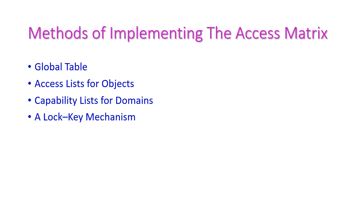The methods of implementing the access matrix are: first, global table; second, access lists for objects; third, capability lists for domains; and fourth, lock-key mechanism. These four are the most popular methods of implementing the access matrix.